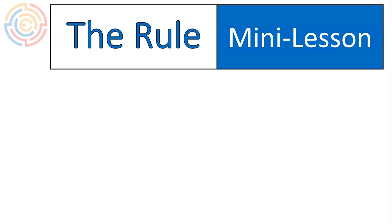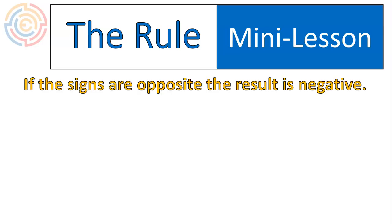Now let's look at the rule when we are working with integers. If the signs are opposite, the result is negative. Let me show you what that looks like. So I have a division question here, negative 12 divided by 4. I am only looking at the signs, the negative 12 and it's a positive 4. That means that these signs are opposite. One is a negative, one is a positive.